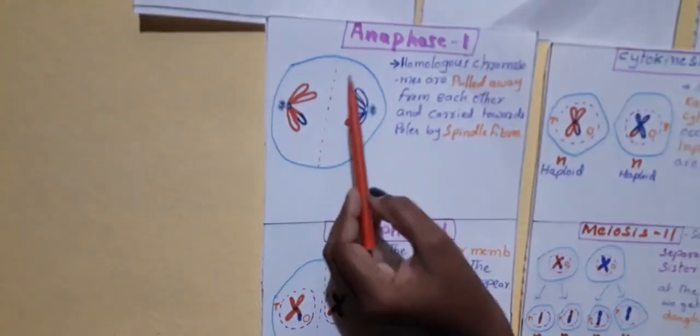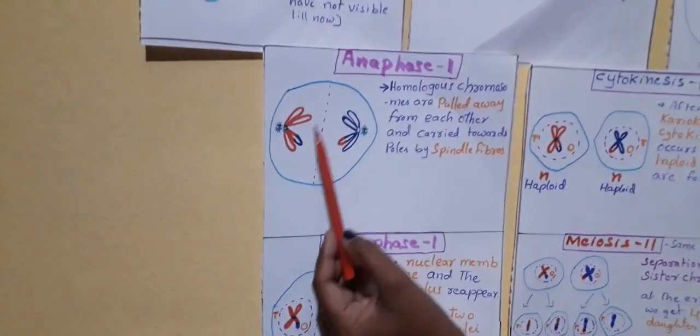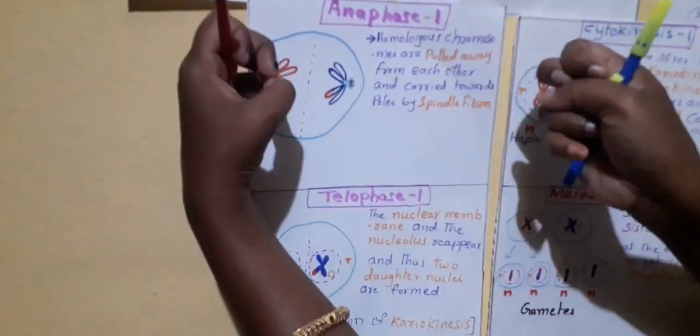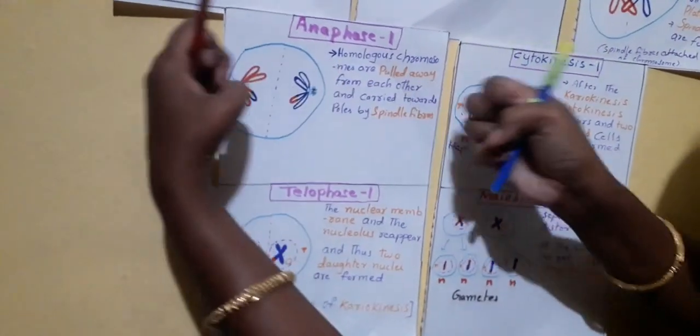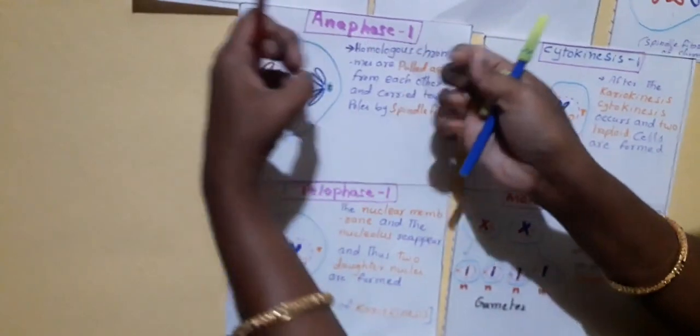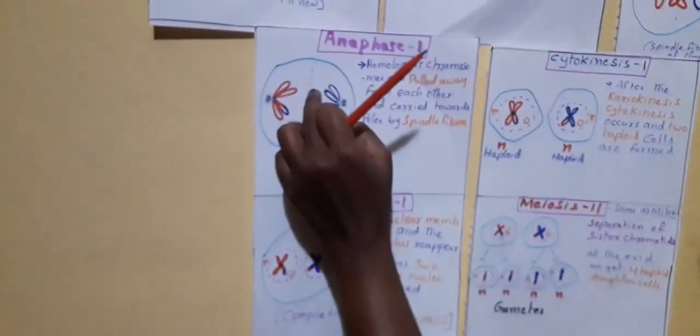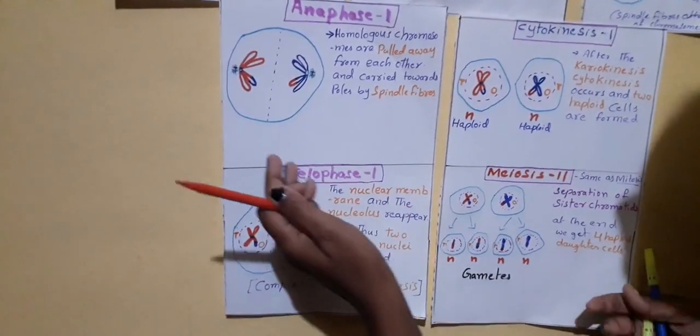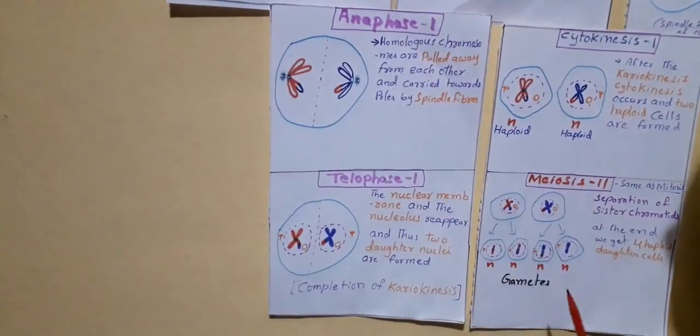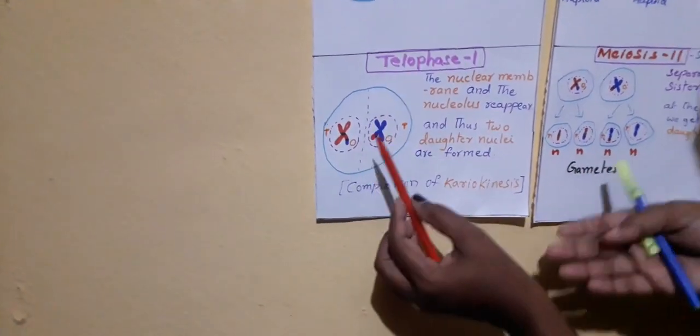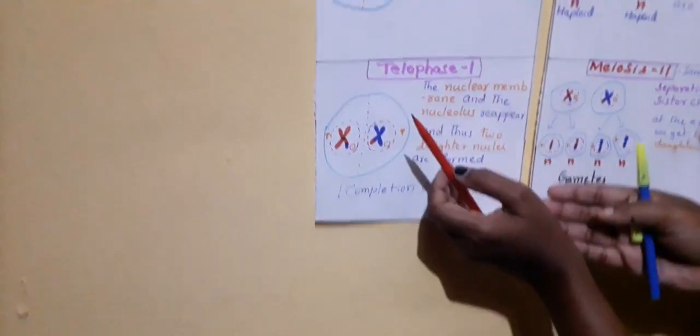Next, coming to Anaphase 1. 'Ana' means opposite — after the Metaphase stage, homologous chromosomes are pulled away from each other and carried towards the poles of the cell by spindle fibers. Then we can see Telophase 1 — 'telo' means last. Telophase 1 is the last stage of Meiosis 1. In Telophase 1, the nuclear membrane and nucleolus reappear. Division of chromosomes is completed, so the nuclear membrane and nucleolus again reappear, and two daughter nuclei are formed.